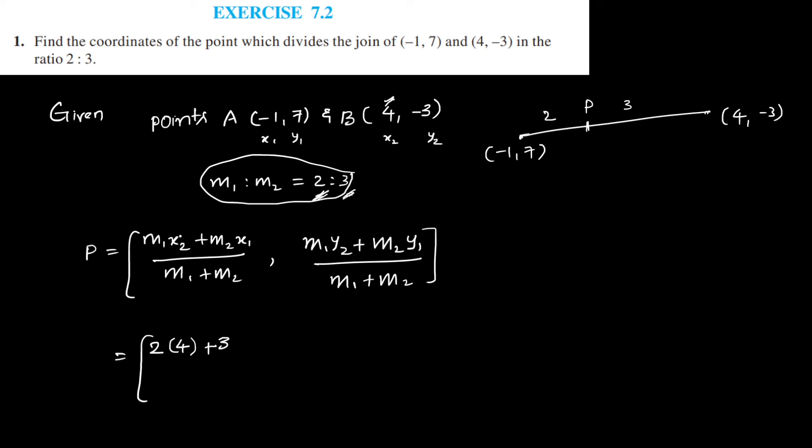M1 is 2, X2 is 4 plus M2 is 3, X1 is -1 by M1 plus M2, 2 plus 3 comma M1Y2, M1 is 2, Y2 is -3 plus M2 is 3, Y1 is 7 by M1 plus M2.